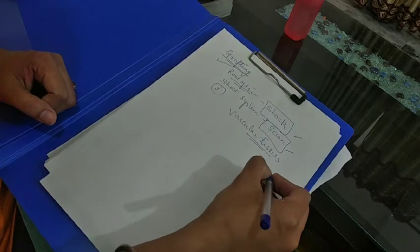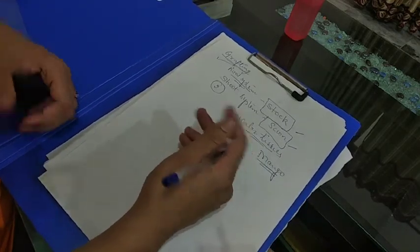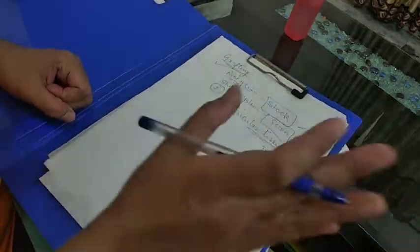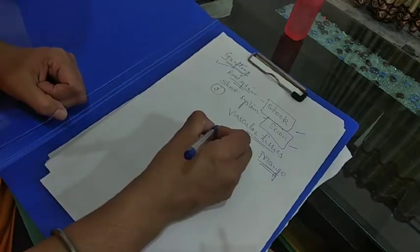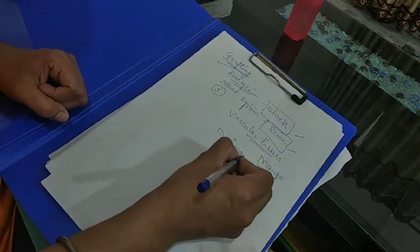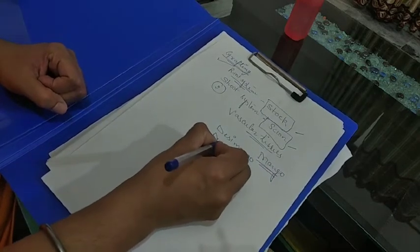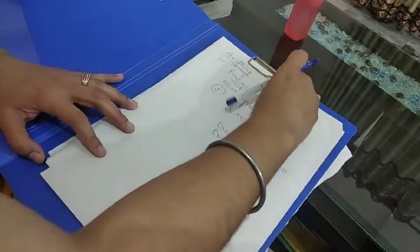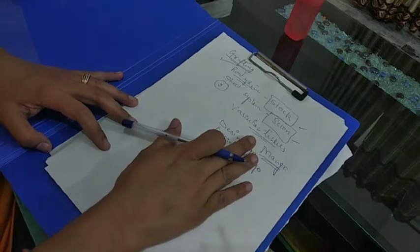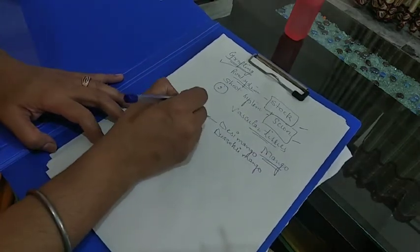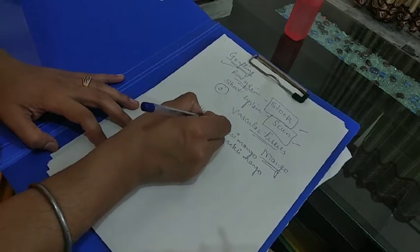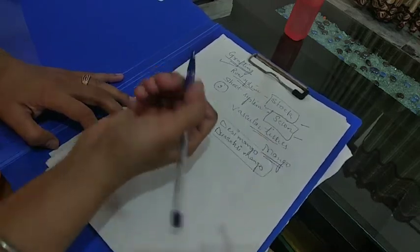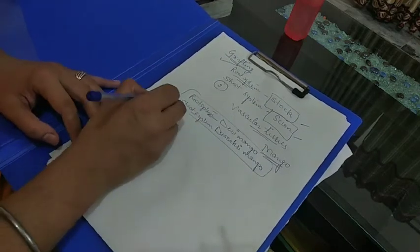We can check which has a strong root system. Basically, the desi mango variety has a strong root system and the Dusehri variety has a strong shoot system. So we combine both to develop one complete composite plant.